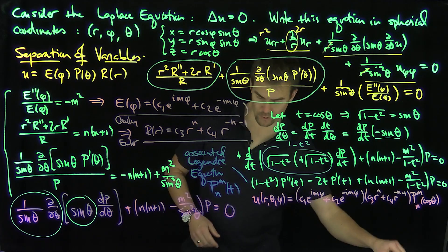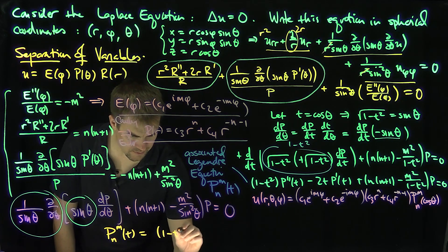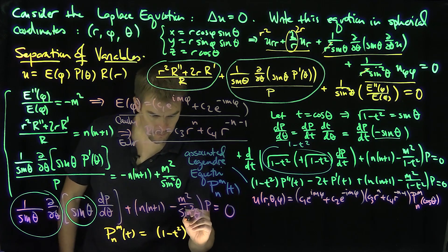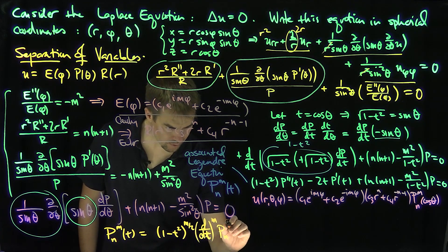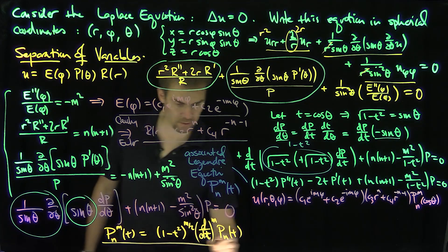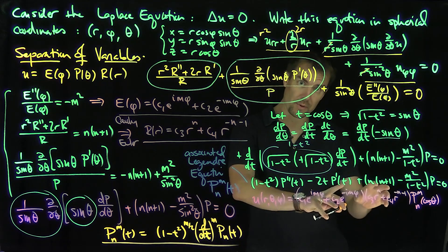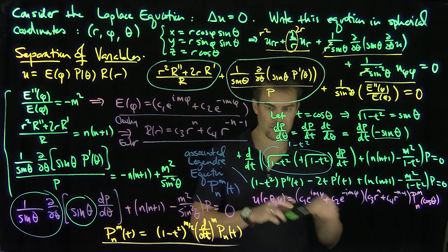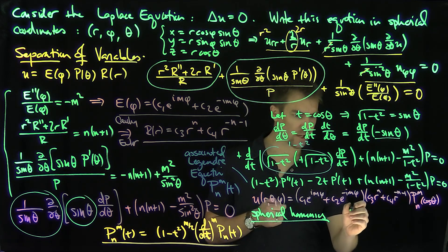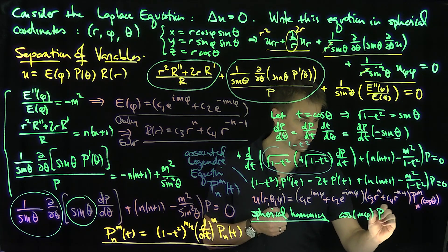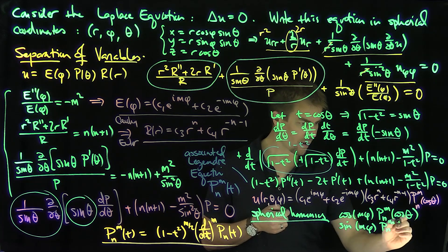Recall that P_n^m(t) = (1−t²)^(m/2) · (d/dt)^m [P_n(t)], where we take m derivatives of the nth Legendre polynomial — these are the associated Legendre functions. The spherical harmonics are what we get when we take the real and imaginary angular parts: cosine(mφ) · P_n^m(cosθ) or sine(mφ) · P_n^m(cosθ). Those are our spherical harmonics Y_n^m(φ, θ).